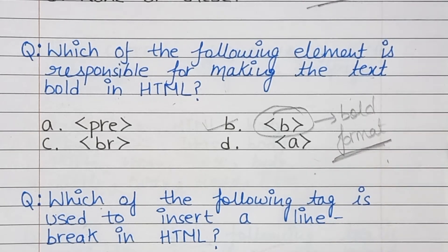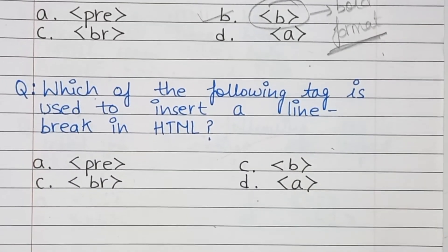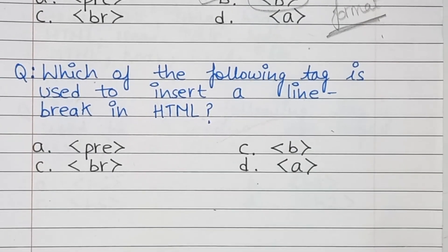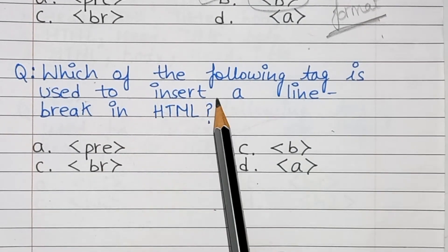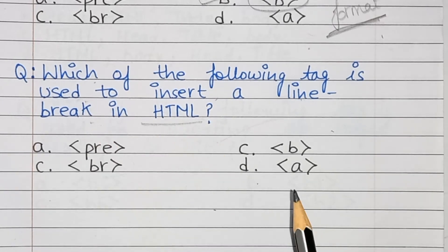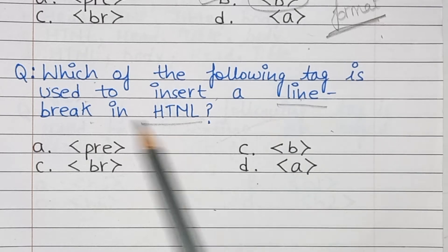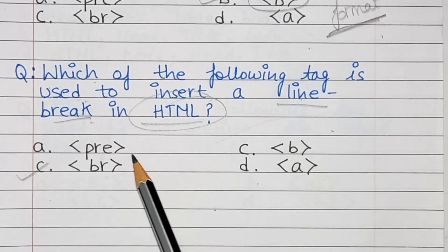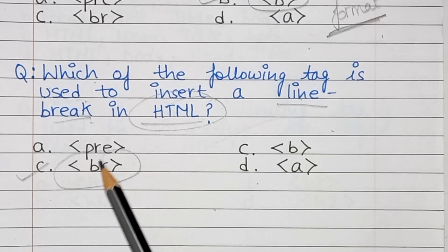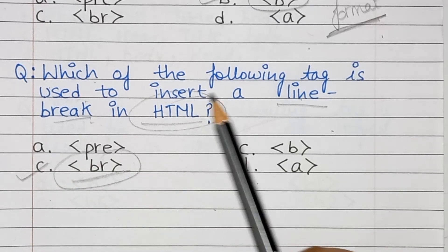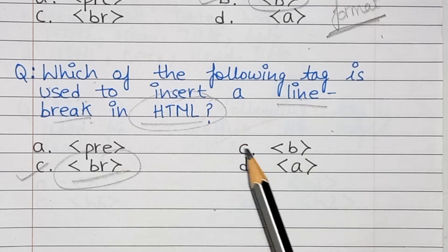Next question: Which tag is used to insert a line break in HTML? The answer is option C — the BR tag. We use the BR tag to insert a line break in HTML.